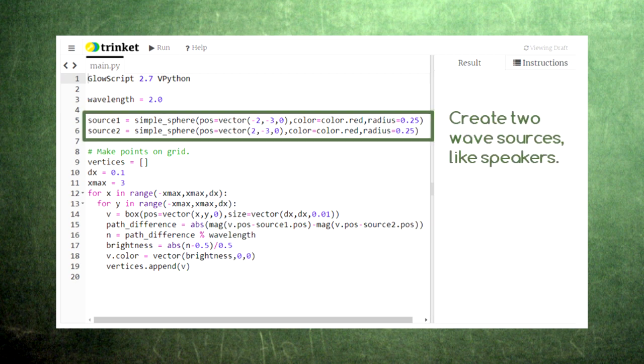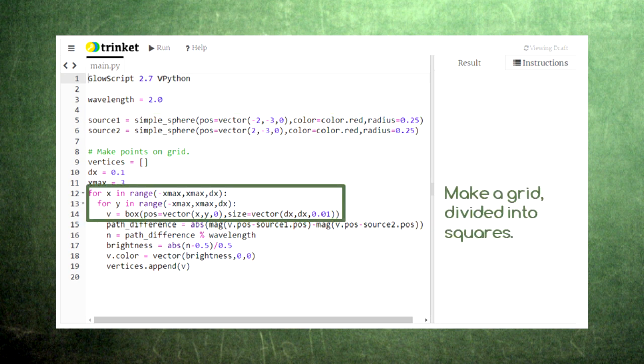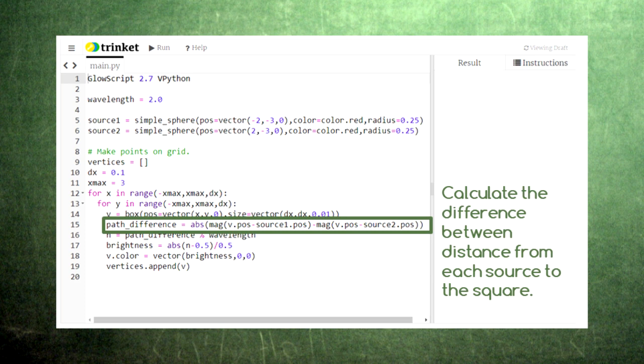Here we create two source points for our waves at the bottom of the grid. Here we set up the grid with each point shown as a box. At each grid point we calculate the difference between the distance from the grid point to source 1 and the distance from the grid point to source 2.